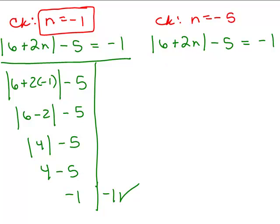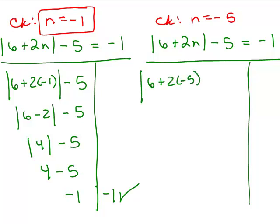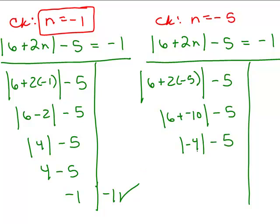Now checking n equals negative 5: plug in negative 5 to get the absolute value of 6 plus 2 times negative 5, minus 5. Inside the absolute value, 6 plus negative 10 is negative 4; absolute value of negative 4 is 4; and 4 minus 5 is negative 1. The right-hand side is negative 1 — it checks out. So n equals negative 5 is another solution, and our solutions are negative 1 and negative 5.